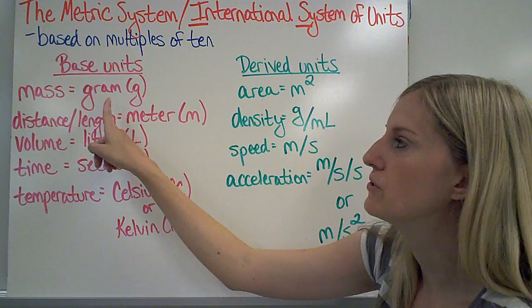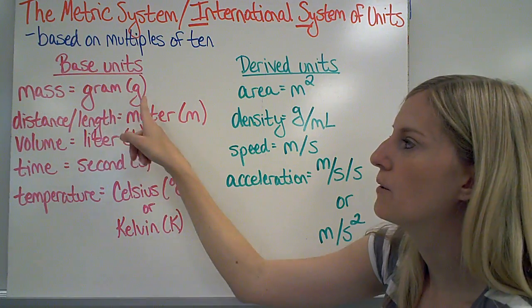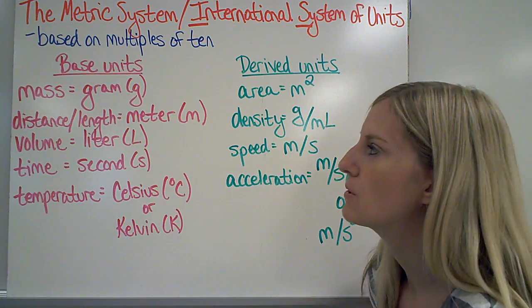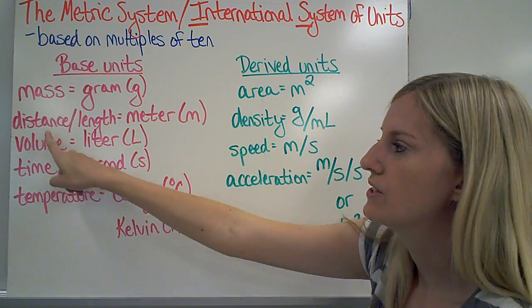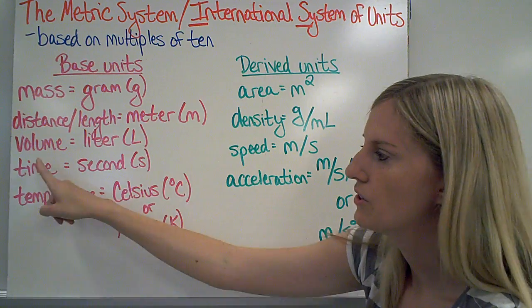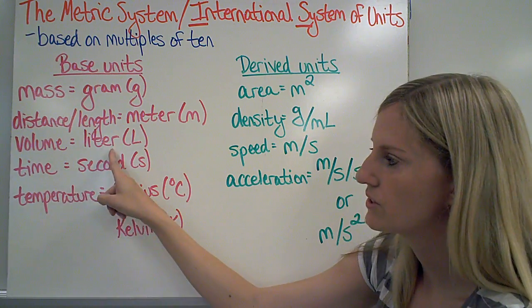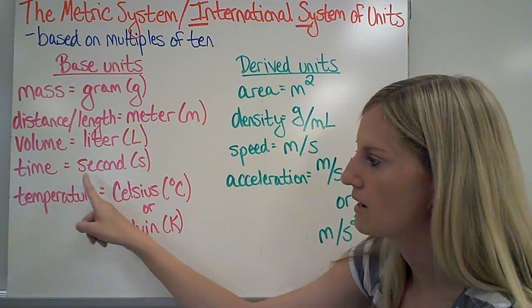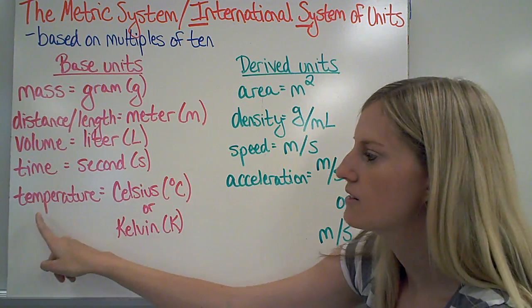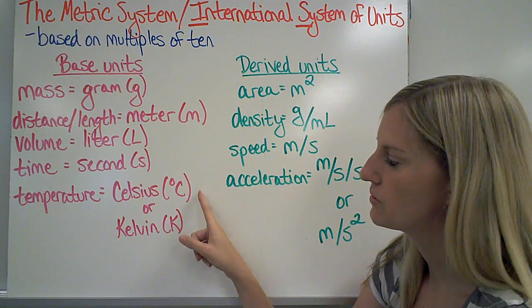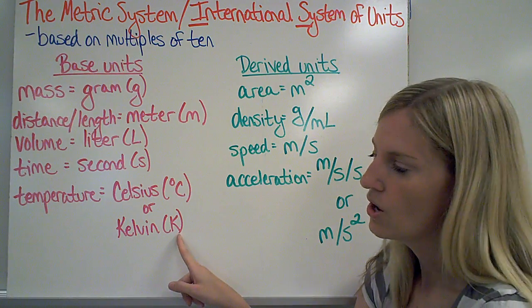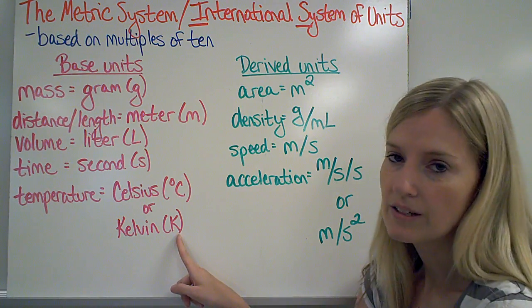For mass, we use grams, and we abbreviate that with a lowercase g. For distance or length, we use meters. Volume, we use liters. Time, we use seconds. And temperature, we can either use degrees Celsius or Kelvin.